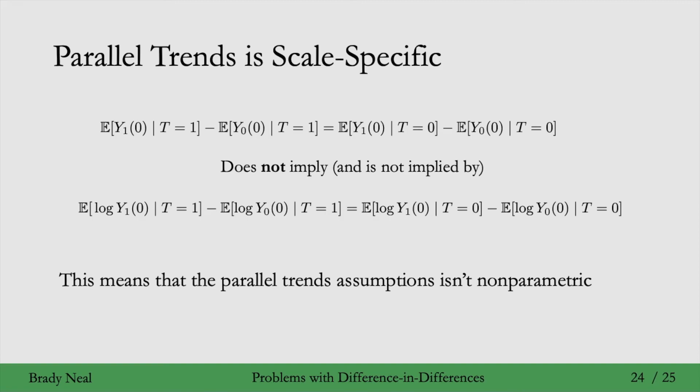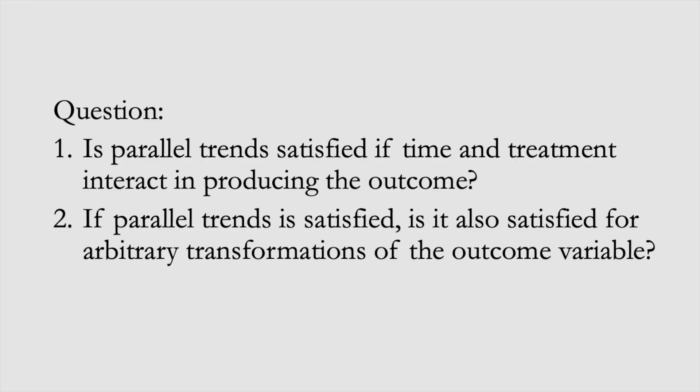Okay, so that concludes the problems with difference-in-differences. And I'll ask you a few questions about these to make sure that you've internalized these important problems. The first is, is parallel trends satisfied if time and treatment interact in producing the outcome? And the second question is, if parallel trends is satisfied, is it also satisfied for arbitrary transformations of the outcome variable?